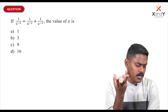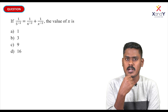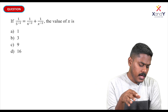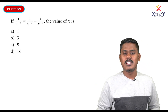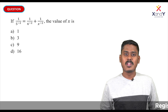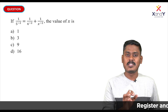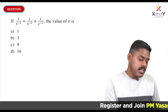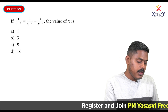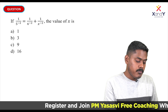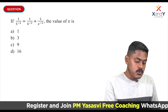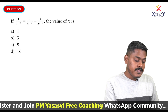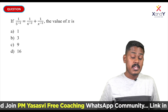We are going to talk about exponents. It is very simple. What is the student's exponent? The question is: if 1 by 5 raised to minus 2 is equal to 1 by 4 raised to minus 2 plus 1 by x raised to minus 2, then what is the value of x?